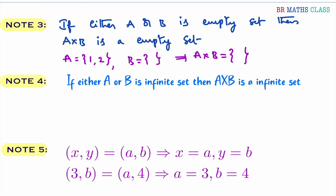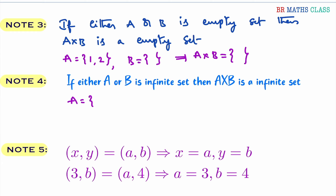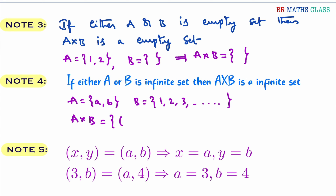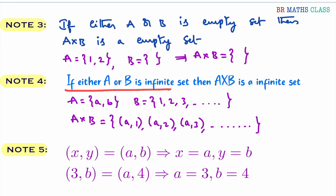Similarly, if either A or B is an infinite set, then A cross B is an infinite set. For example, set A is {a, b} and set B is an infinite set like {1, 2, 3, ...}. Then A cross B would give: (a,1), (a,2), (a,3), (a,4), ... and it continues as an infinite set. So if either A or B is an infinite set, then A cross B is an infinite set.